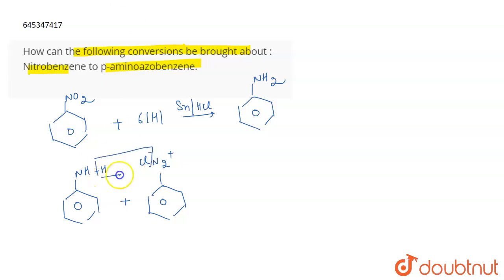Loss of HCl takes place, and on rearrangement, this leads to the formation of a benzene ring, N double bond N, then a benzene ring.